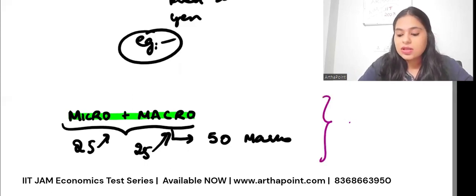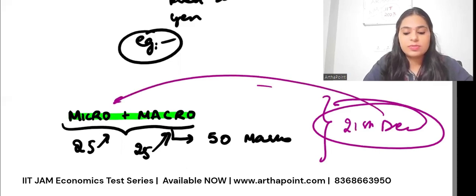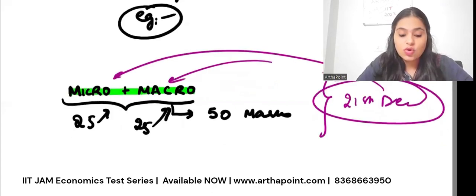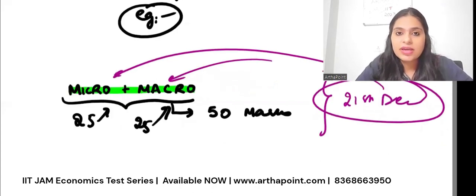Today is 21st November. Can you promise me that by 21st December all of this will be done? Aisa toh nahi hoga na kuch bhi nahi pada. Micro mein consumer theory pada hoga. Macro mein ma'am GDP toh kiya tha, multiplier toh kiya tha. International economy nahi kiya, Solow model nahi kiya, Harrod-Domar nahi kiya. What you're missing can be done. So you have to cover micro and macro by December.